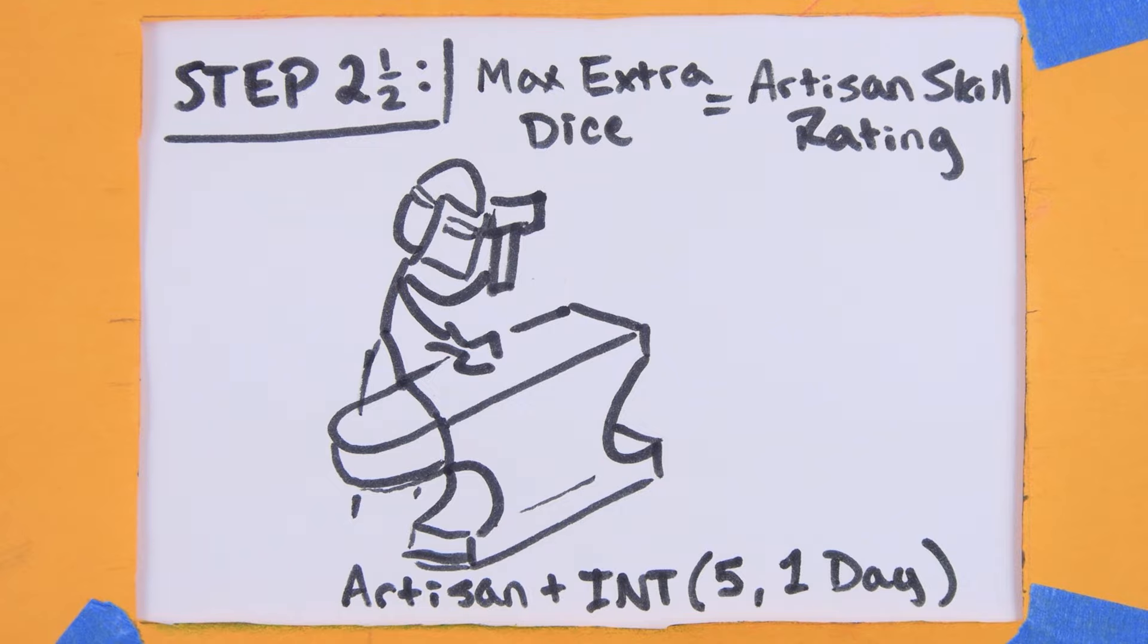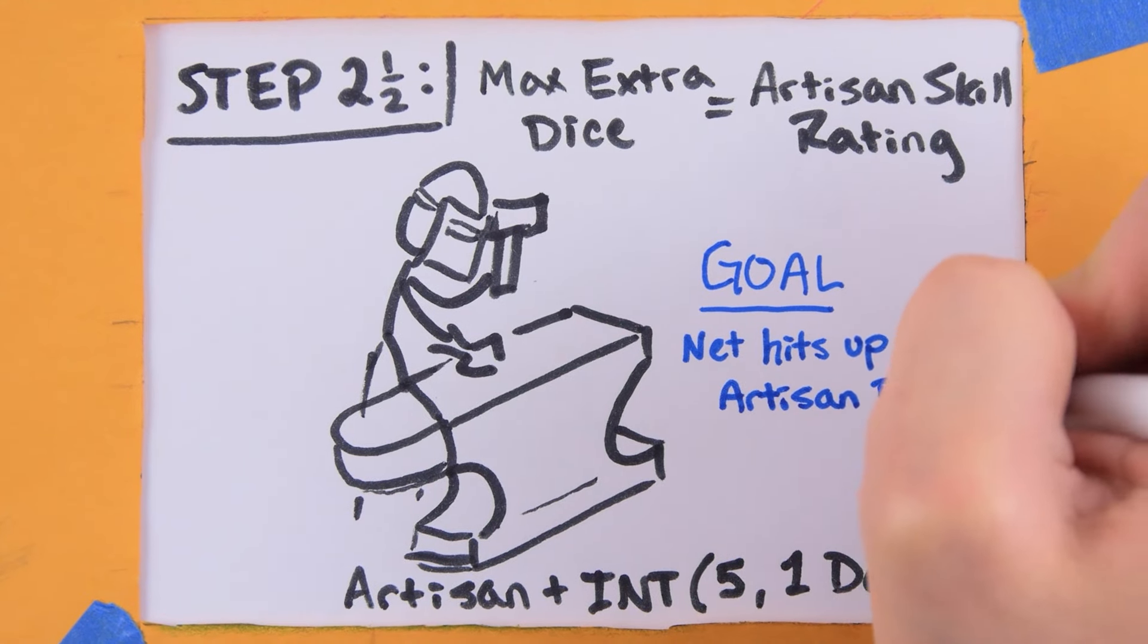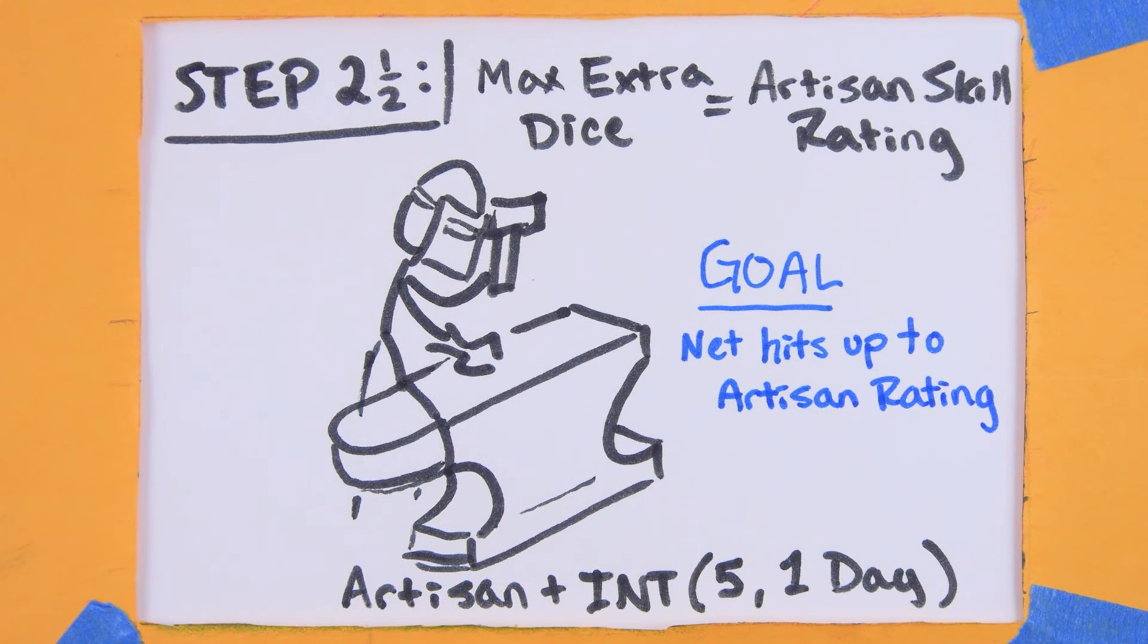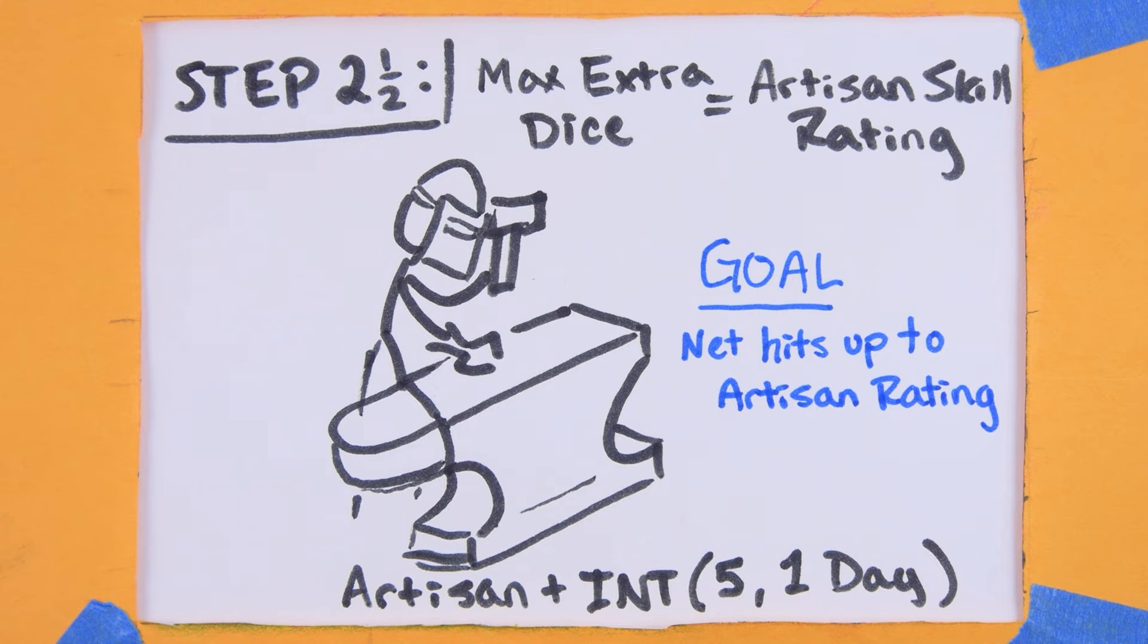You can take as many days as you like to finish the talismah, but your goal is to accumulate as many net hits as your ranks in artisan. Each net hit, meaning hits after the first 5, gets you an extra die in step 5, where you will be enchanting the thing.